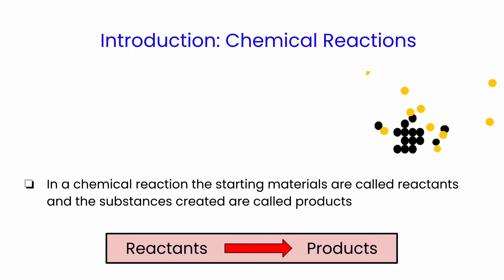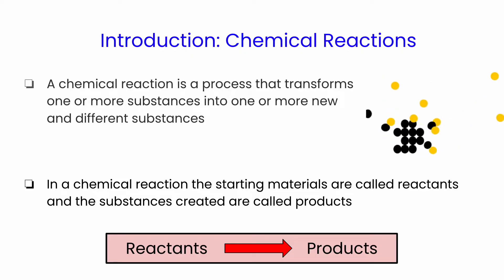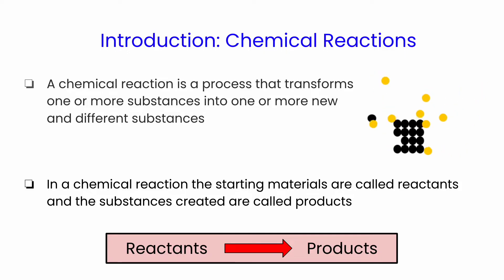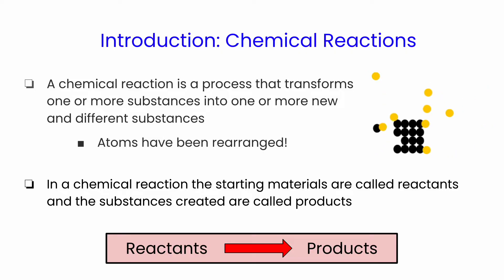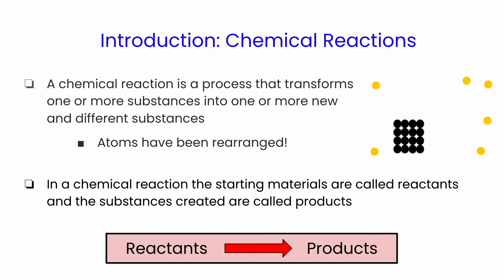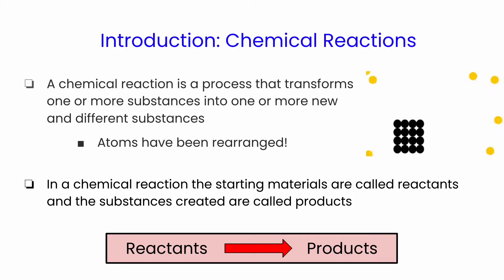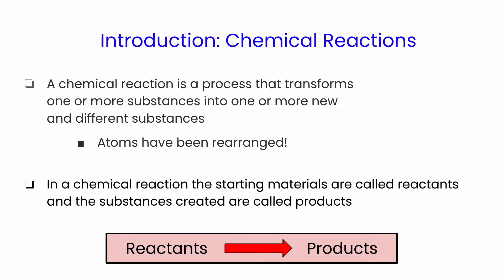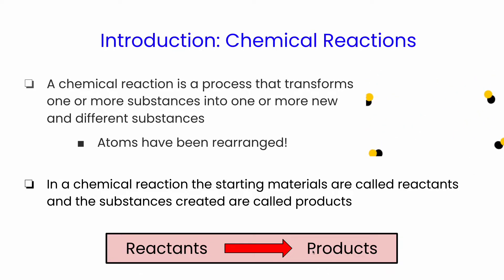To get started, we first need a little bit of background knowledge about chemical reactions. A chemical reaction is a process that transforms one or more substances into one or more new and different substances. In a chemical reaction, atoms are rearranged. The starting materials are called reactants, and the substances that are created are called products. Generally, we write that reactants with an arrow form products.